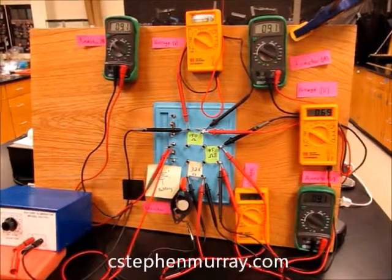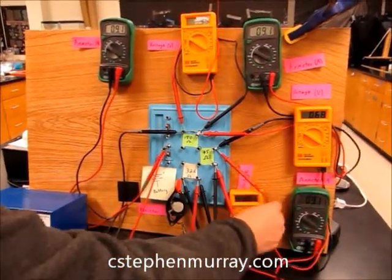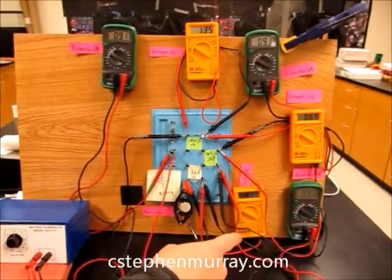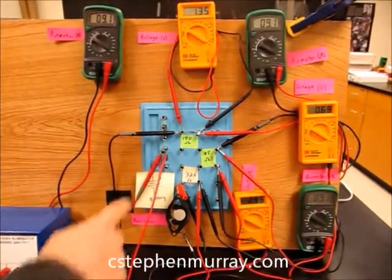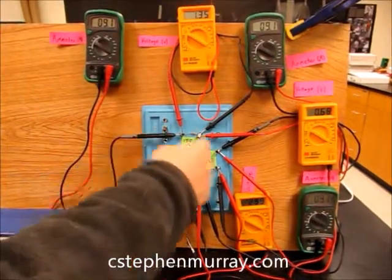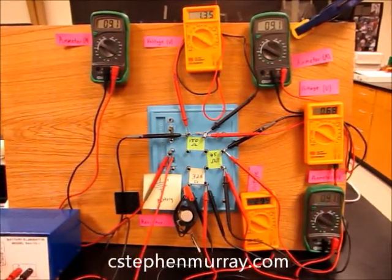Alright, so now let's look at what we have. Let's look at all of the ammeters first. Notice all of the ammeters read the same. Think about this - there's only one path in a series circuit for the electrons to flow.